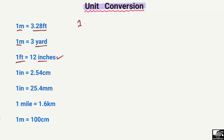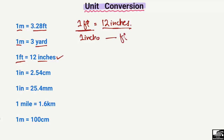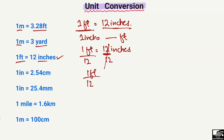Now how do we convert inches into feet? We know that 1 foot is 12 inches, but how many feet are there in 1 inch? To convert this, there is a simple method: we know that 1 foot equals 12 inches, so we divide both sides by 12. The 12 cancels, and we get 1 inch equals 1/12 foot, or 0.083 foot.